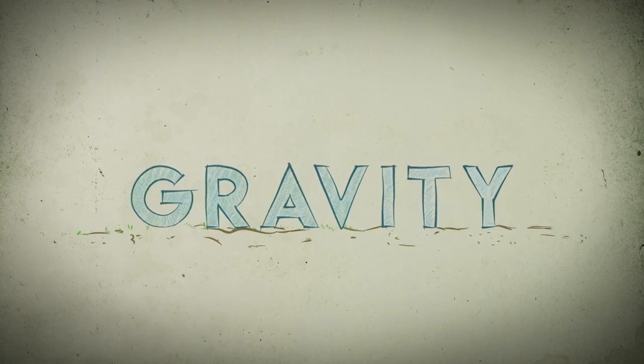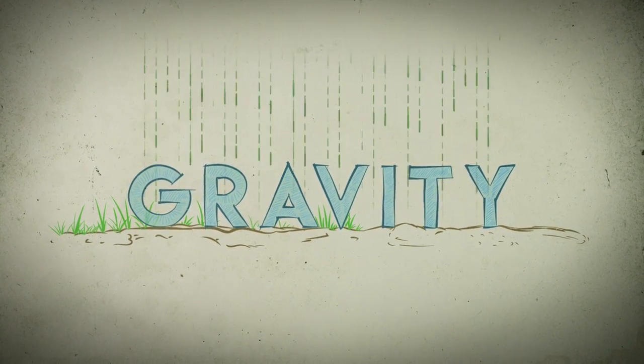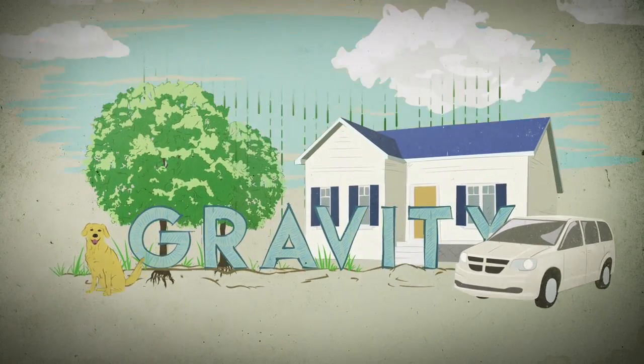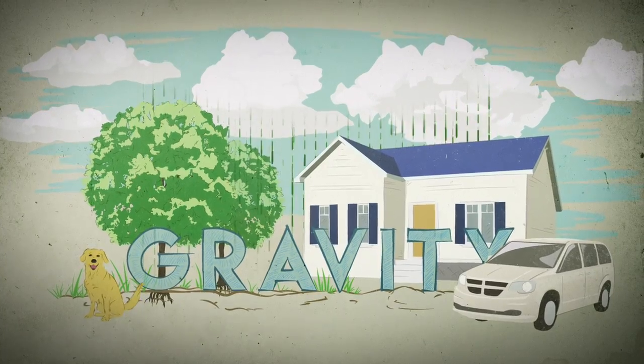To talk about how we remove something from a planet, we're going to have to talk about two forces of nature. Firstly, the force of gravity. Gravity is the thing which is holding you down to the planet, but it's also what is holding the atmosphere down onto the planet as well.